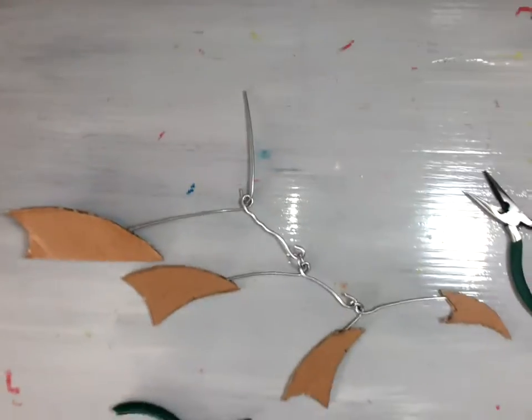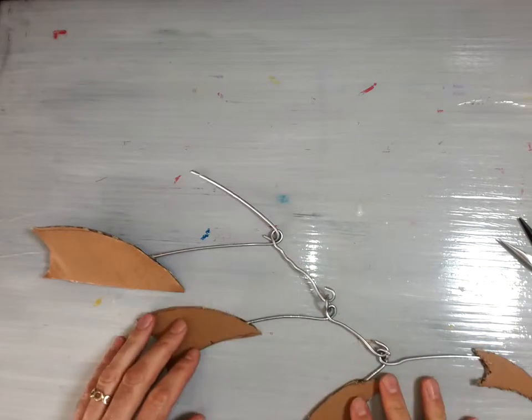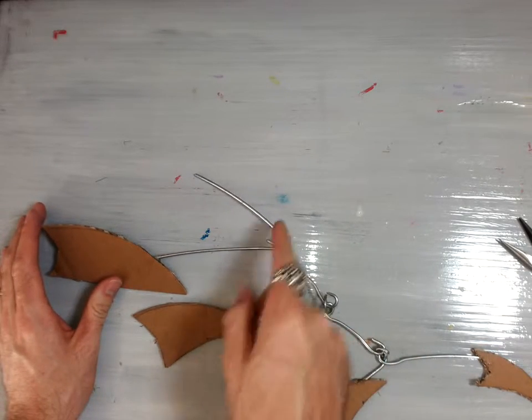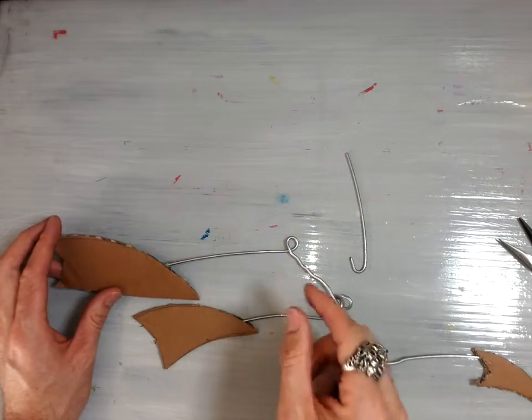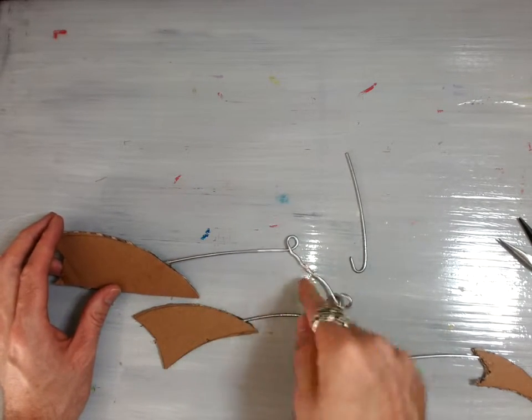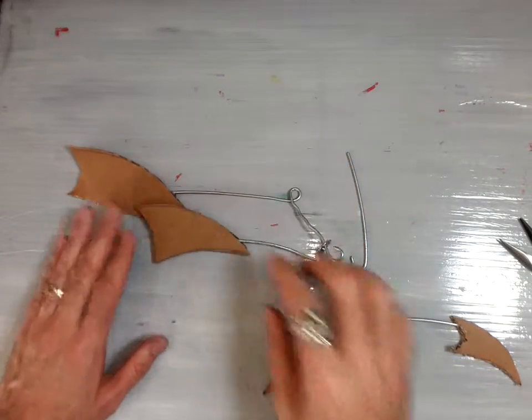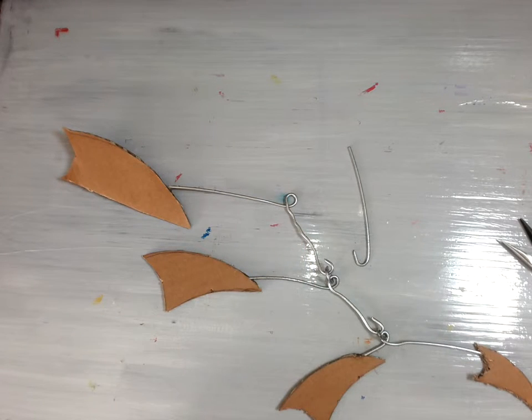So the two options are number one, undoing the whole thing and retwisting it again. Or number two, rolling this twist here over to the left or over to the right to adjust it ever so slightly. And then just bending the arm back out. So that concludes our little problem solving video for what if your bar isn't completely balanced the first time.